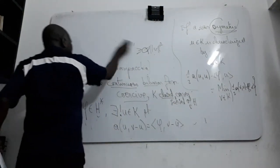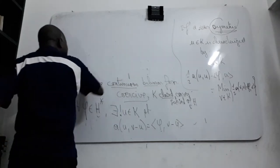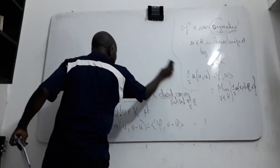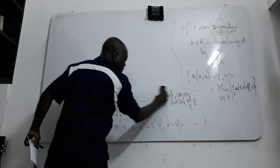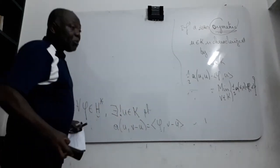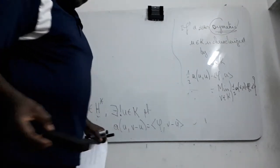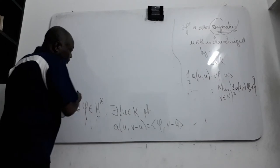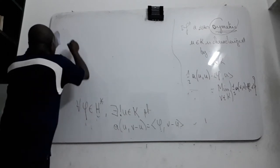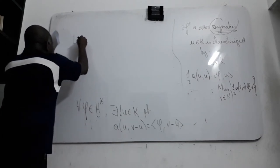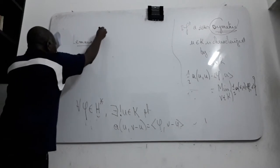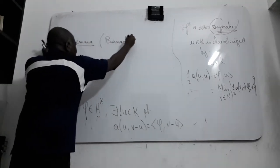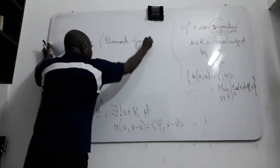For the proof of this one, you need a lemma. For the proof of this one, the theorem of Stampacchia. For the proof of this one, you need a lemma which is called Banach, Banach fixed point theorem.